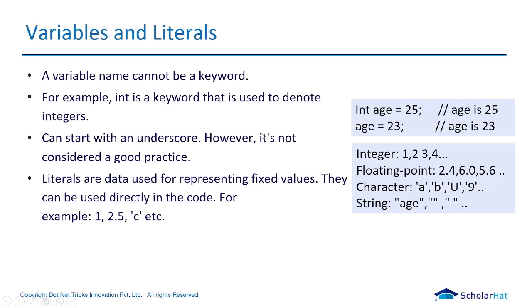Variables can start with an underscore, however it is not considered good practice. A variable name must start with letters or it can start with underscore, but that's not preferred. Literals are data used for representing fixed values - for example, 1, 2.5, and 'c' are all literals. In the statement 'int age = 25', int is the data type, age is the variable name, '=' is the assignment operator, and 25 is the literal.